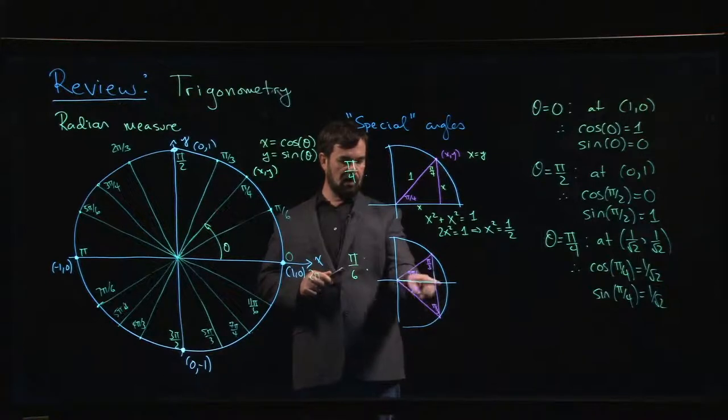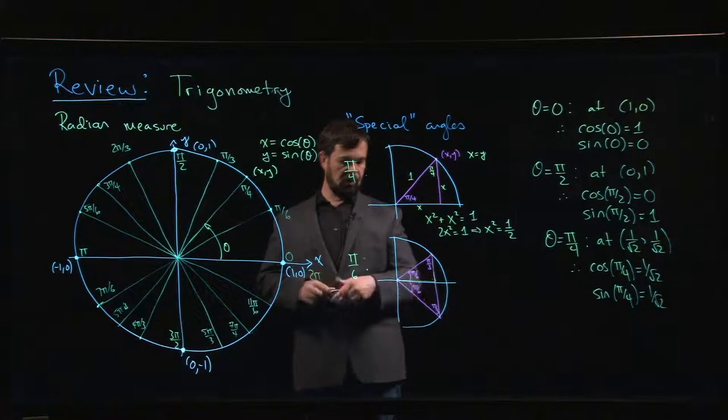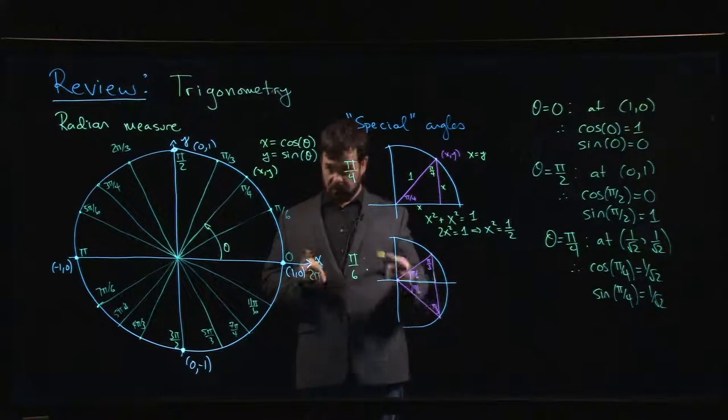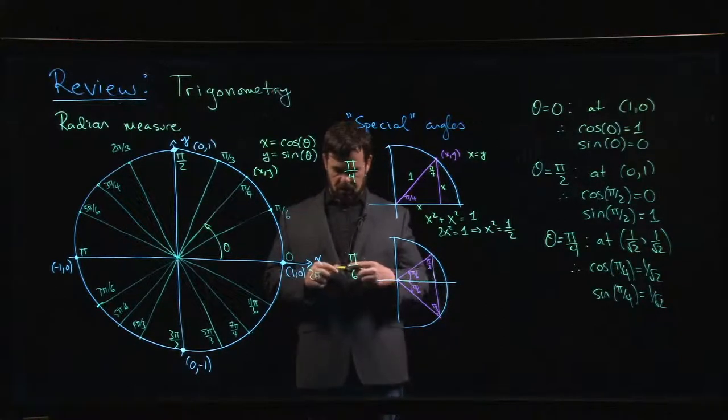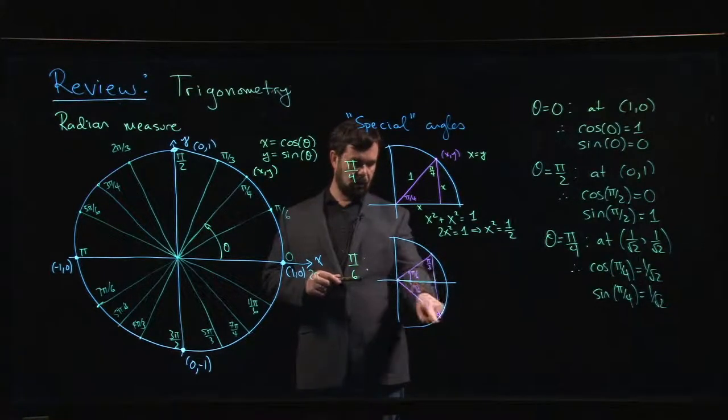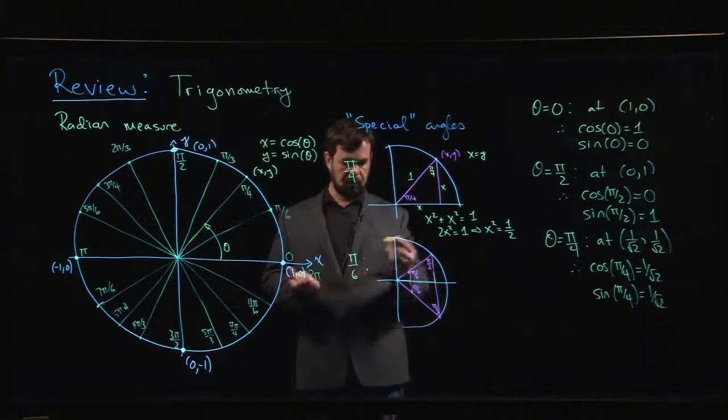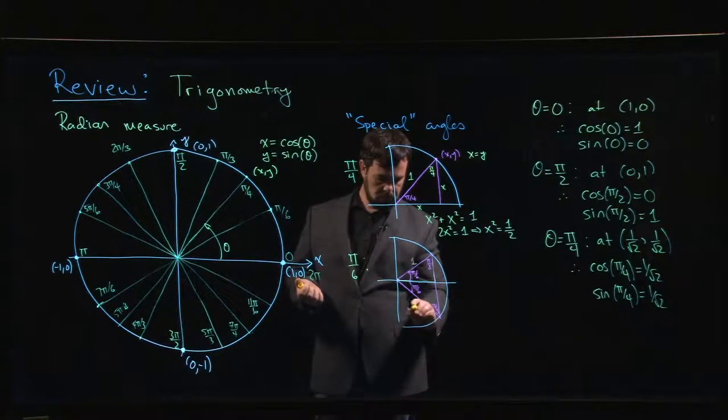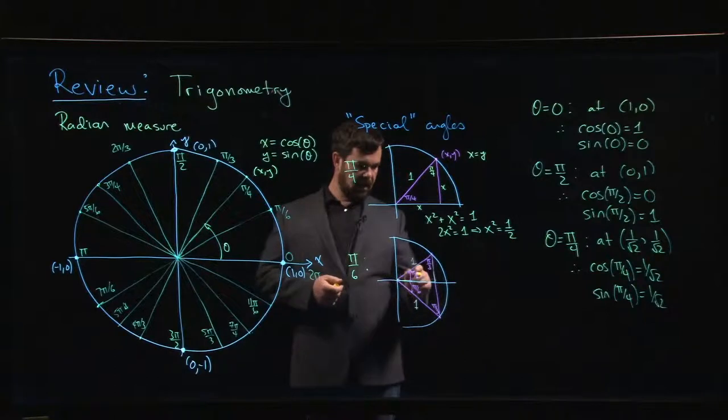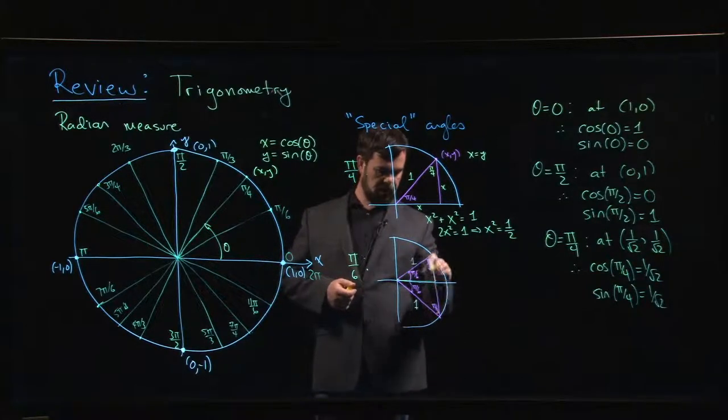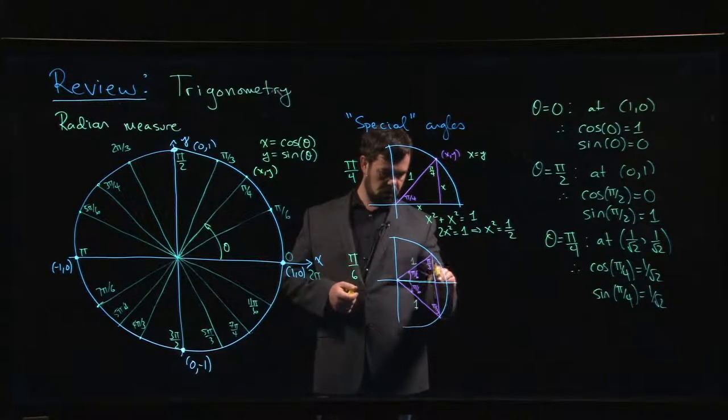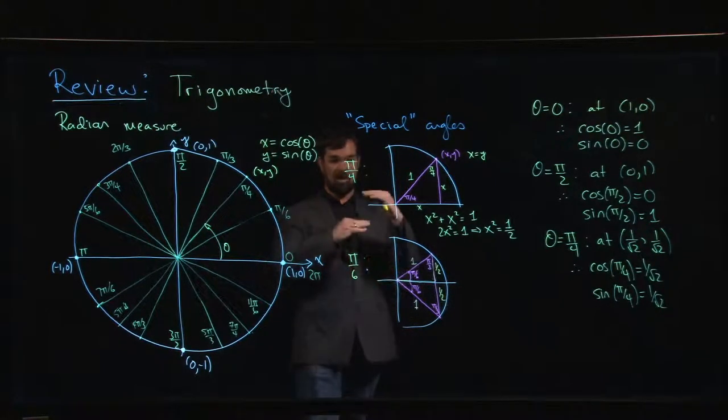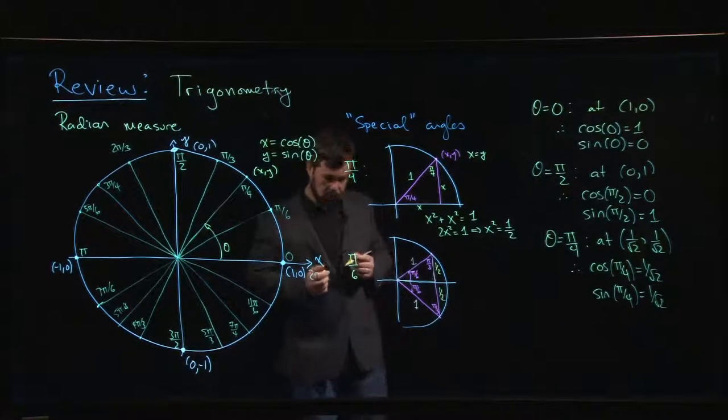So if we reflect that across, symmetry says that this is also a 60 degree angle. And if you look at the big triangle, two 30 degree angles add up to a 60 degree angle. So this is an equilateral triangle. If all three angles are the same, all three sides are the same. And we know that this side has length 1, so that side has length 1. And that means that, again, because of symmetry, those two sides have length 1 half, because you take a side of length 1 and you're splitting it in 2.